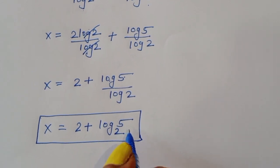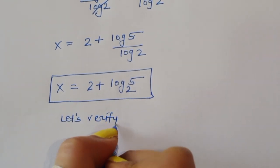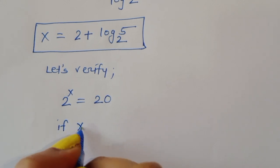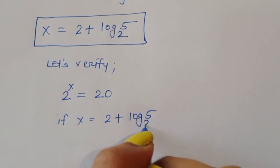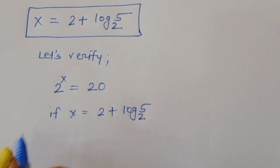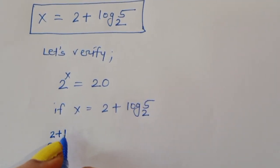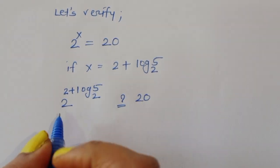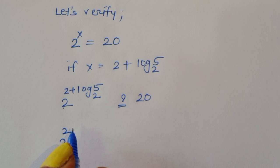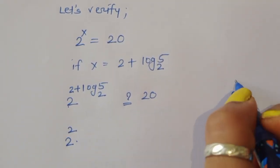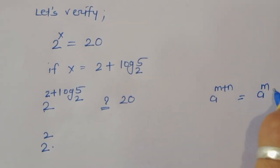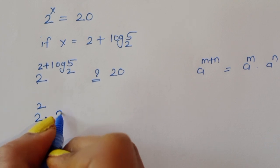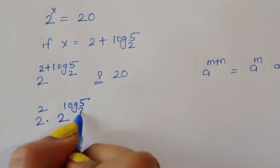Let's verify whether this is correct. The question is 2 power x equals 20. If x equals 2 plus log 5 to the base 2, we need to verify this equals 20. So we write 2 power (2 plus log 5 to the base 2). Using the rule a power m plus n equals a power m times a power n, this becomes 2 power 2 times 2 power (log 5 to the base 2).